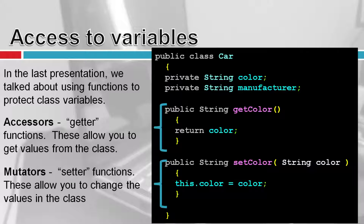The second part is mutators. Mutating something means changing it — changing the value. So we call those the setters. I'm setting values; these allow you to change the values in the class. Here I'm using the setter function, setting the color, passing it a value, and the class's variable changes.